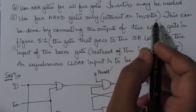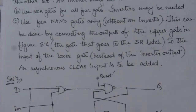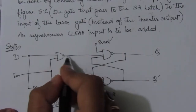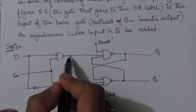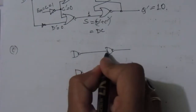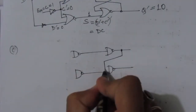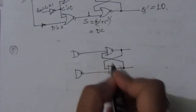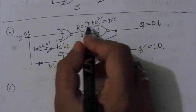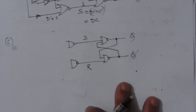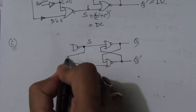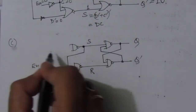In the third case, we have to use four NAND gates but without an inverter. This can be done by connecting the output of the upper gate in figure 5.6 to the input of the lower gate. We draw the circuit: the two NAND gates are cross-coupled for the SR latch part with S and R inputs. The output of the upper gate is fed to the input of the lower gate, and D is the input.